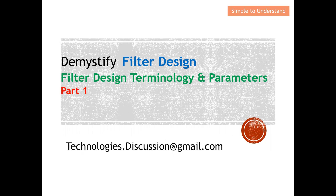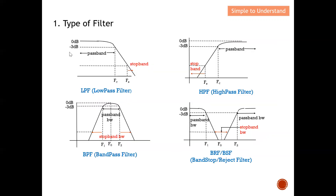Let's start the discussion by mentioning the different types of filters. There are actually four types: number one is called low pass filter, number two is high pass filter, number three is band pass filter, and last but not least, band stop or band reject filter. These are the four types of filter that we're going to study in depth.